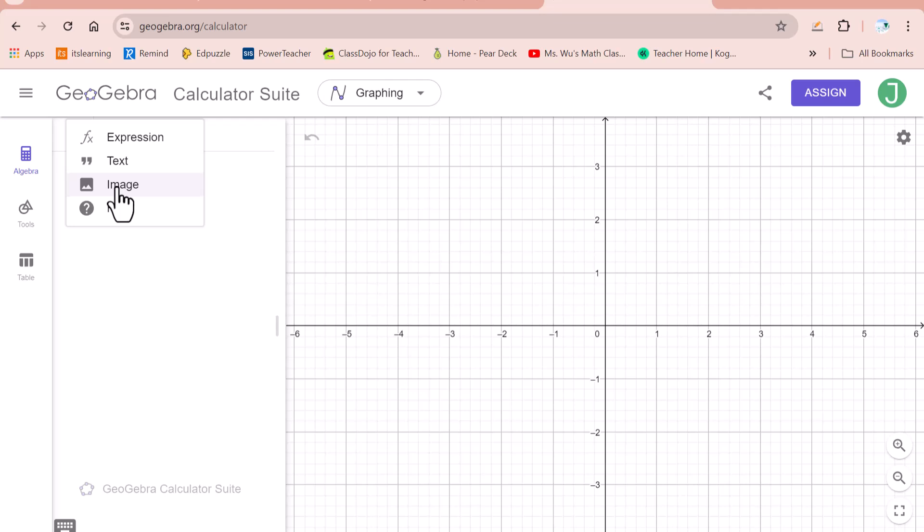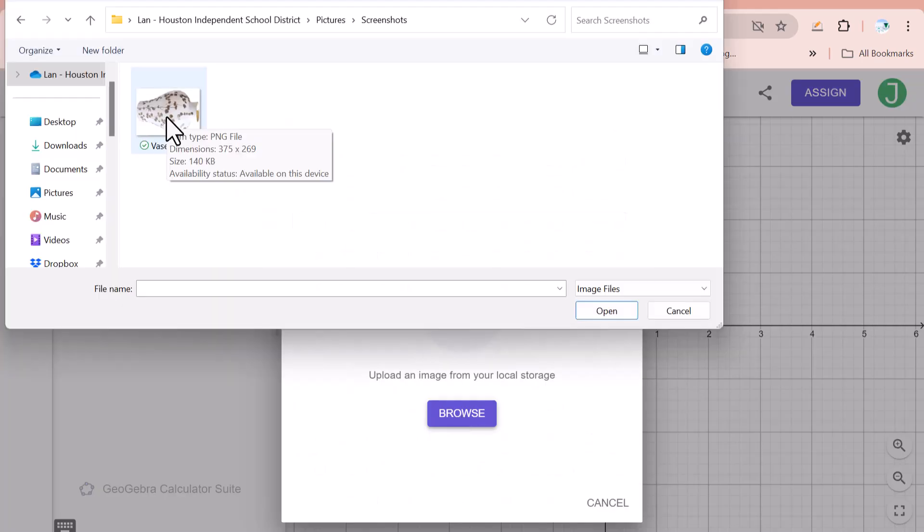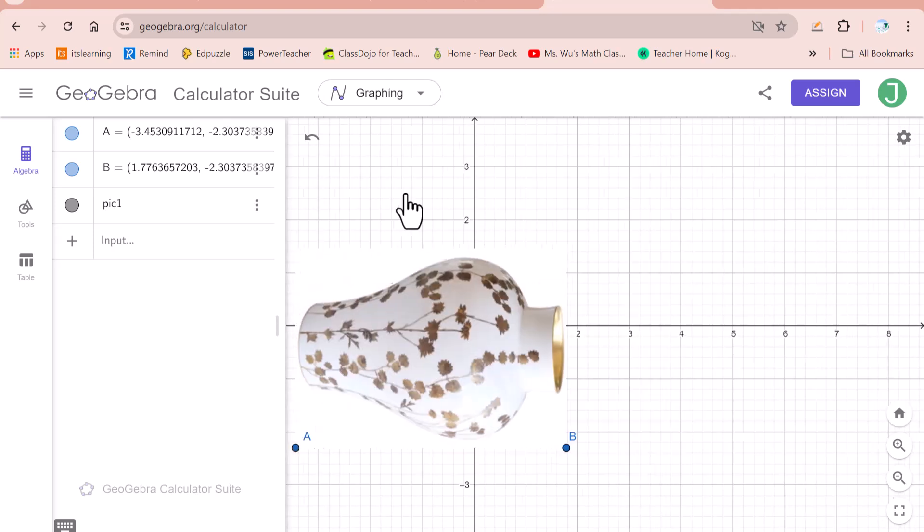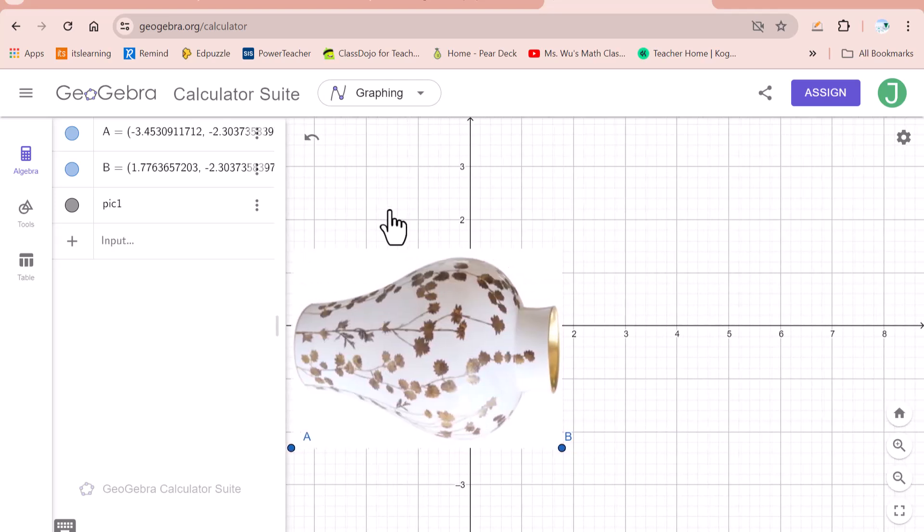We need to put the image of vase into this GeoGebra. Browse. Double click on the picture. Then move this coordinate plane.